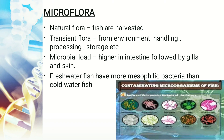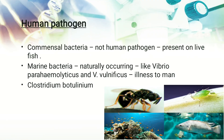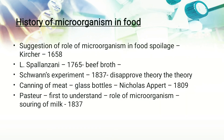Fresh water fish have more mesophilic bacteria than cold water fish. Human pathogens are not naturally present on live fish — commensal bacteria are present, but they are not pathogenic to humans. Naturally occurring marine bacteria like Vibrio parahaemolyticus and Vibrio vulnificus can cause illness in man. Clostridium botulinum is also one such naturally occurring marine bacterium.